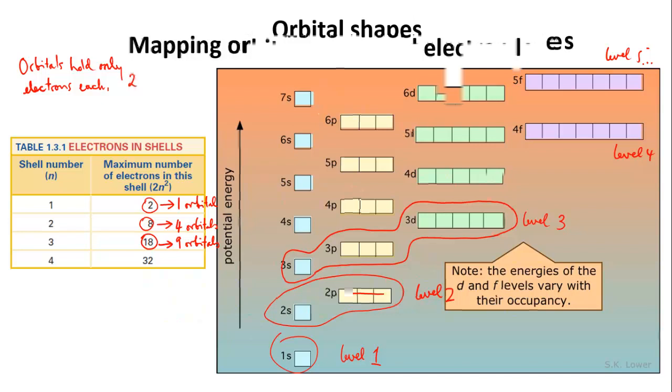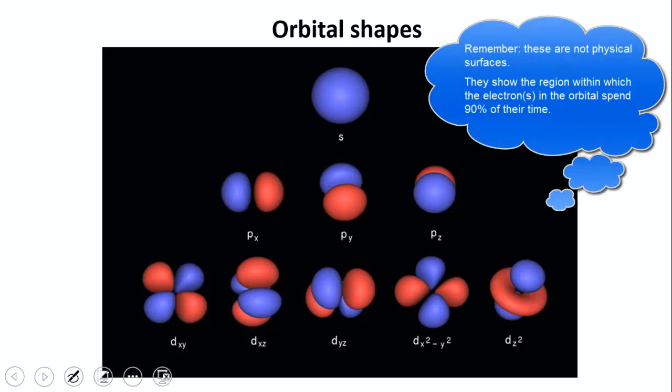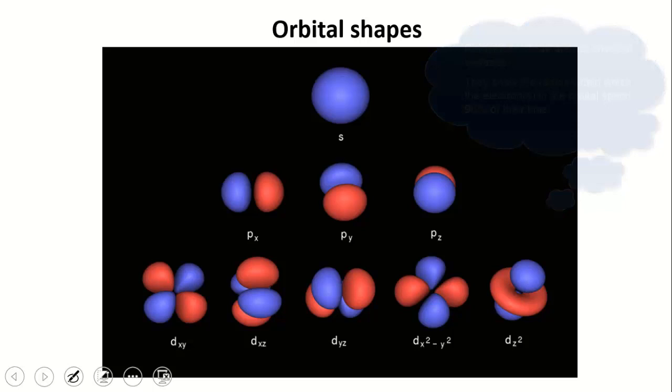It's not necessary for you to remember these shapes, but I think it's interesting to see them nonetheless. Remember that the surfaces of the shapes in this diagram just indicate the region within which the electrons in that orbital spend most of their time.